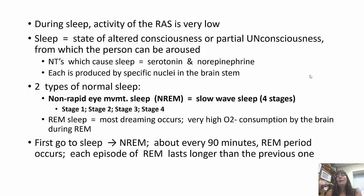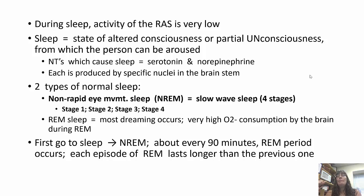There are two types of sleep: non-REM and REM. Non-rapid eye movement sleep has four stages of slow-wave sleep — stages 1 through 4. REM sleep is where most dreaming occurs, and there is very high oxygen consumption by the brain during REM sleep. When we first go to sleep, we're in non-REM sleep; about every 90 minutes a REM period occurs, and each episode of REM lasts longer and longer.